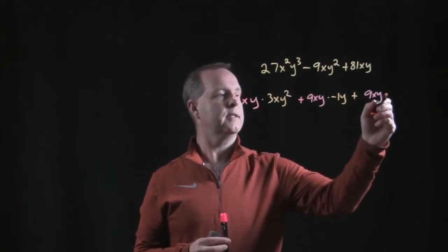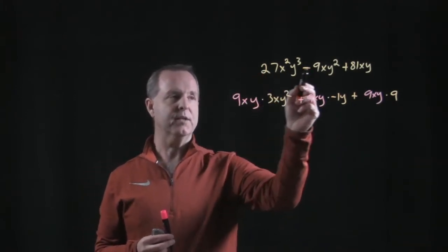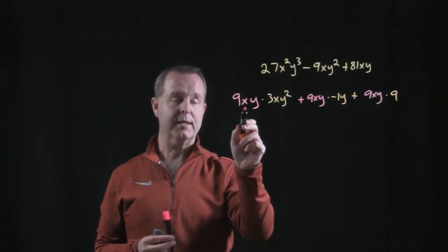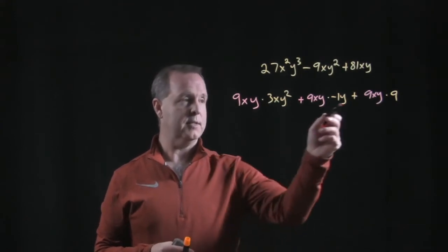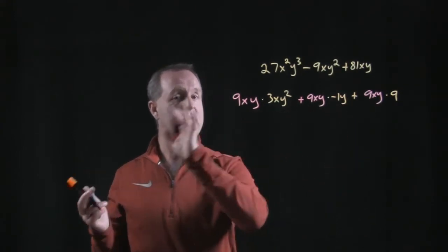So I was able to rewrite each of these terms as a product of factors that include the greatest common factor and what's left over to make that original term. So let's pull out a 9xy from each of these terms. That means we're factoring them out.